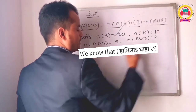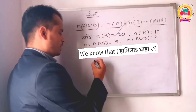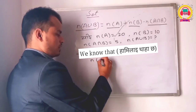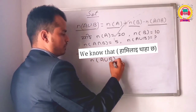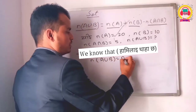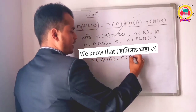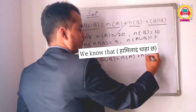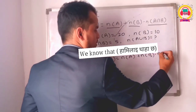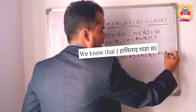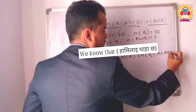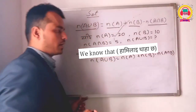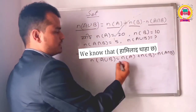So it's going to be: number of A union B is equal to number of A plus number of B minus number of A intersection B. Now replace the values.